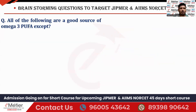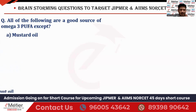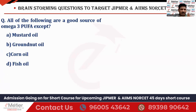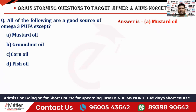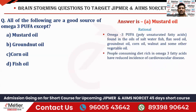The fifth question asks: all of the following are good sources of omega-3 polyunsaturated fatty acids (PUFA) — EXCEPT? This is an except question. The options are mustard oil, groundnut oil, corn oil, and fish oil. The right answer is option A — mustard oil is not a good source of omega-3 PUFA. Omega-3 PUFAs come from saltwater fish, flaxseeds, groundnut oil, corn oil, walnut oil, and other vegetable oils. A diet rich in omega-3 fatty acids reduces the incidence of cardiovascular disease.